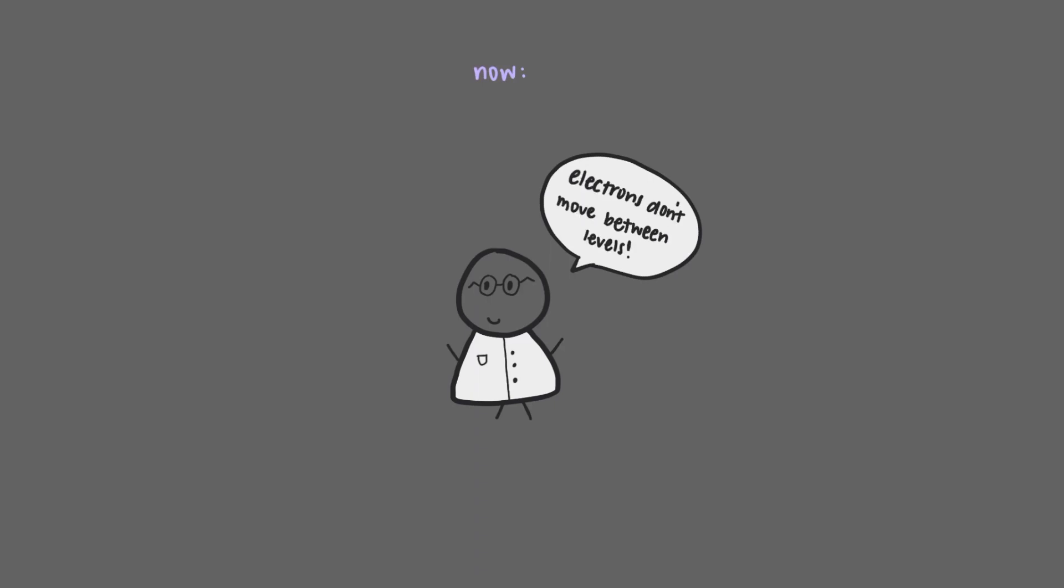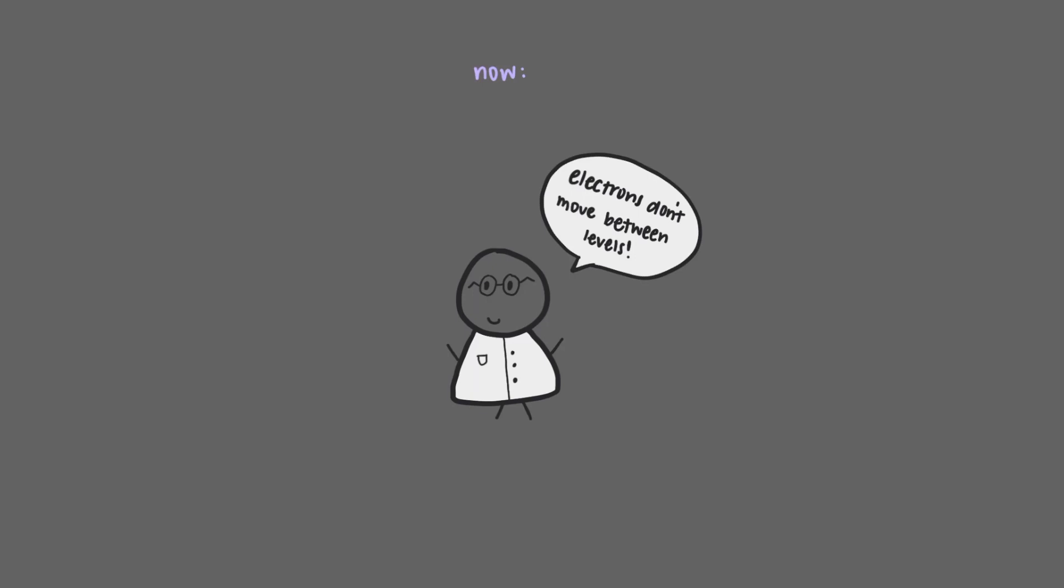So it's not correct to think of electrons as moving between levels. That's just not true. This diagram, which uses the equation to get energies, is only modeling the energy of the electron waves, nothing else.